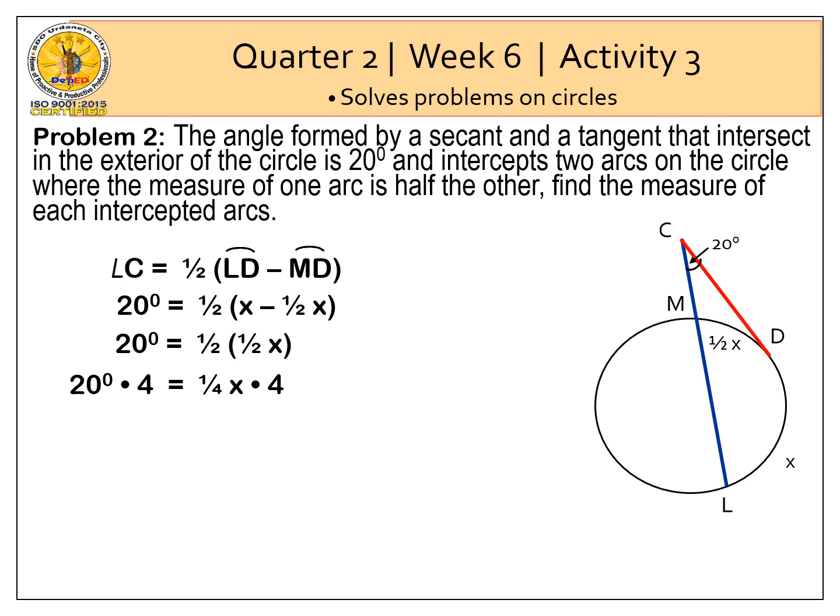Multiplying both sides by 4, X is equal to 80 degrees. Therefore, arc LD is 80 degrees, which is one of the intercepted arcs.